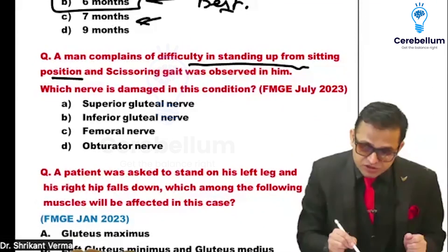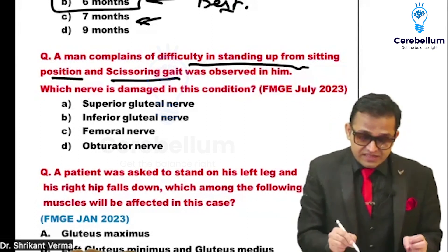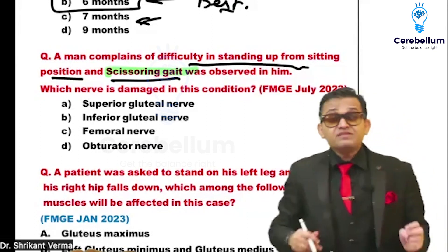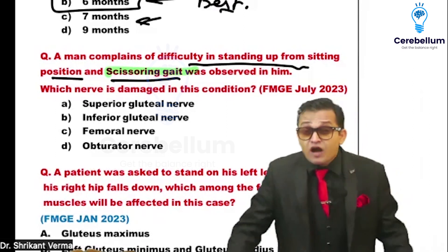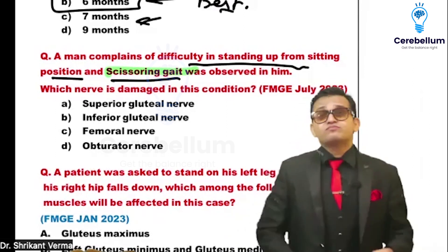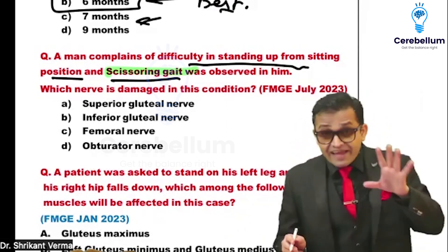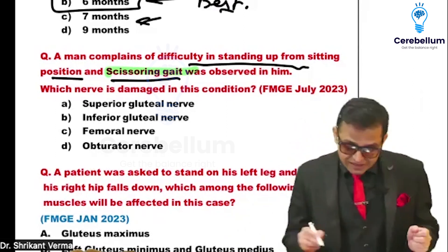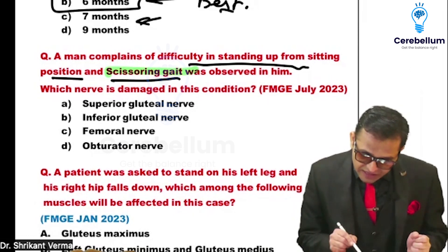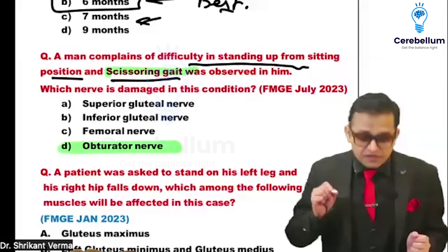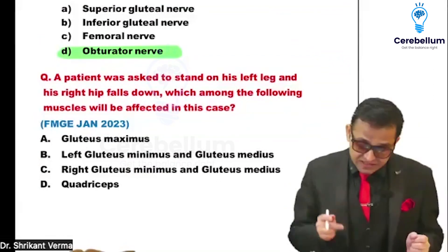Difficulty in standing up from a sitting position and scissoring gait — scissoring gait means there is involvement of the medial side, specifically spasm of the medial side of the thigh. The medial side of the thigh is supplied by which nerve? The answer is the obturator nerve. Gait we have to study from orthopedic integration.